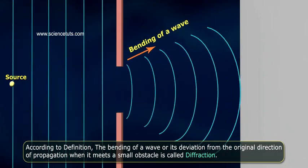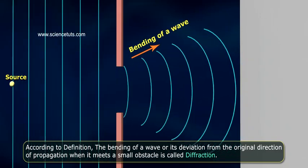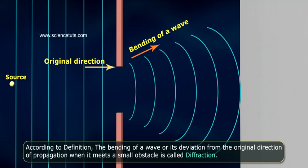the bending of a wave or its deviation from the original direction of propagation when it meets a small obstacle is called diffraction.